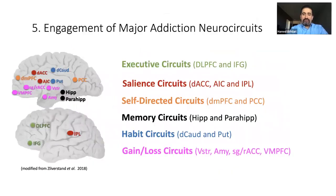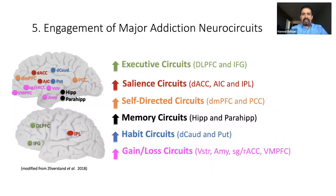The fifth issue that makes me interested in fMRI drug cue reactivity is having all those major circuits that are important in drug addiction — executive circuits, salience circuits, self-directed circuits, memory, habit, gain, loss — all those things can get engaged with fMRI drug cue reactivity. People have shown this before, and it is another important aspect of this paradigm, giving us activations in many different areas.